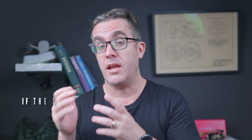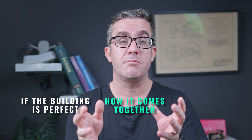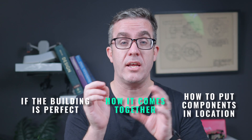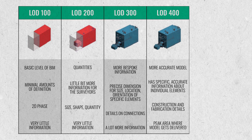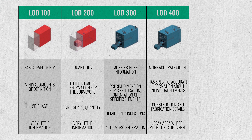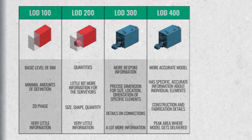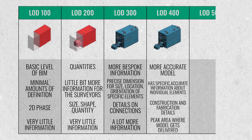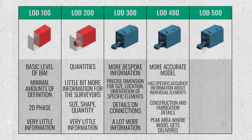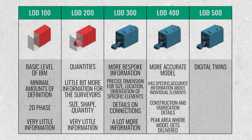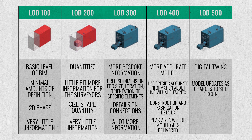LOD 400 is really the peak of where your model gets delivered — typically just before the building gets constructed. LOD 500 is really where digital twins come in, as this is where you need to have as-built data. As we know with any site, things need to change as they come to site, so you need to update your model as these changes occur.